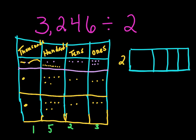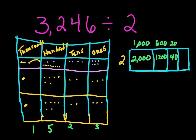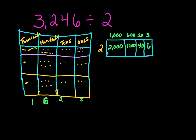So it is 1,523. But let's check that out using the area model. 2 can't go into 3,000, but it can go into 2,000, giving us 1,000. We take 3,000 minus 2,000, leaving 1,000. In the hundreds we now have 1,200, and 1,200 divided by 2 is 600. We have 40 in the tens — 20 times 2 gives us 40. And 6 ones gives us 3 ones. So the quotient is 1,623. I forgot to add the extra one, so it's 1,623.